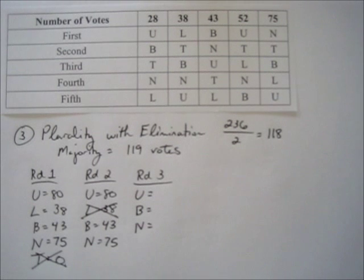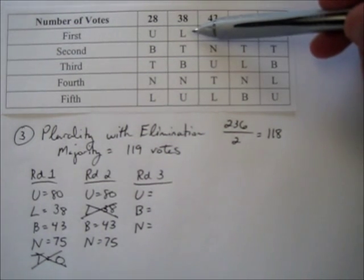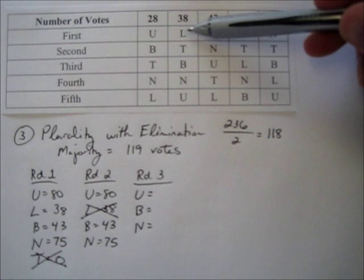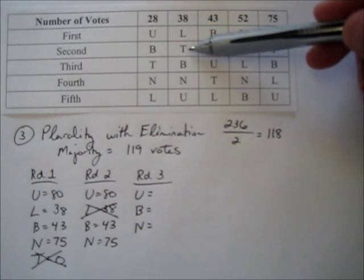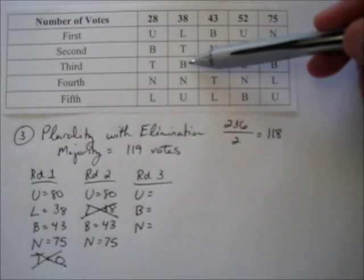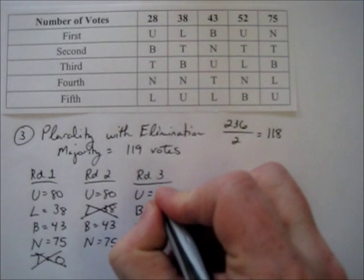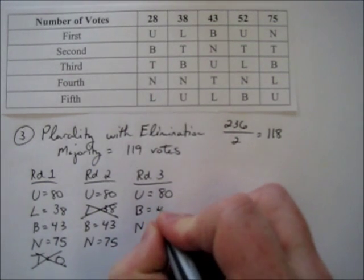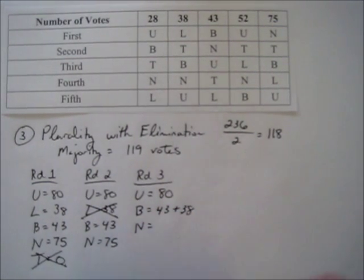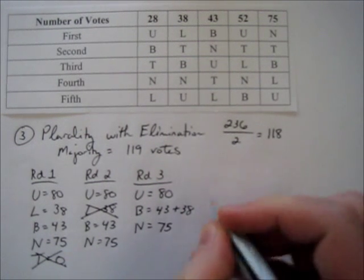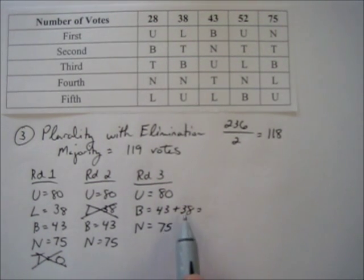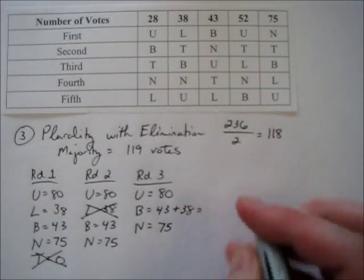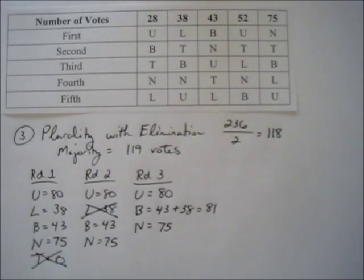Lifehouse's 38 votes must be redistributed. Looking at those voters' columns, their next choice would have been Train, but Train is already eliminated, so those 38 votes go to Blue Cantrell. After round three: Usher stays at 80, Blue Cantrell has 43 plus 38 which is 81, and Nelly has 75. Still nobody has 119.